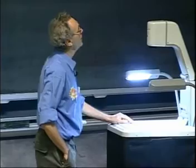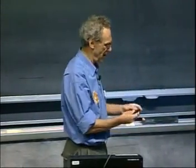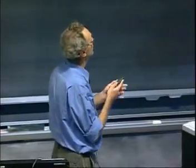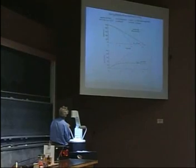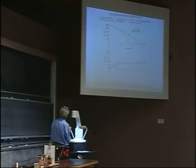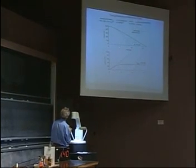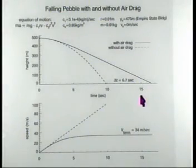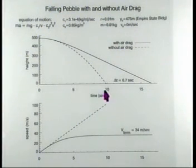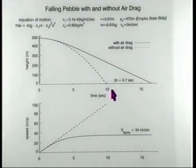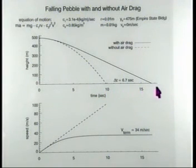Now you see the Empire State Building, which has a height of 475 meters. That's where you start at T0. This is 1 second, 5 seconds, 10 seconds, 15 seconds. And if there had been no air drag, it would hit the ground a little less than 10 seconds. But now it will hit the ground more like 16, 17 seconds.